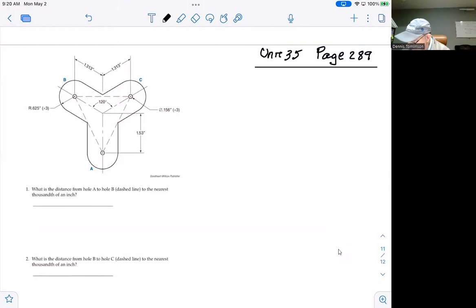What we're asked to do in Problem 1 is find the distance from hole A to hole B, the dashed line. That is the center to center distance, the dashed line drawn from A to B to the nearest thousandth of an inch.